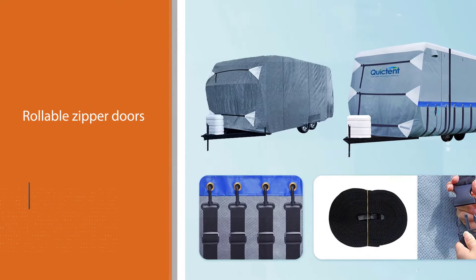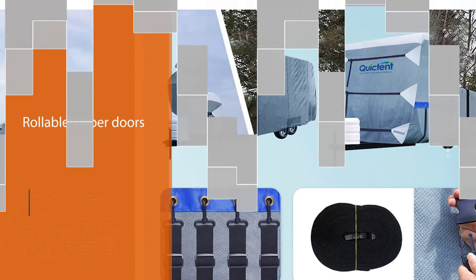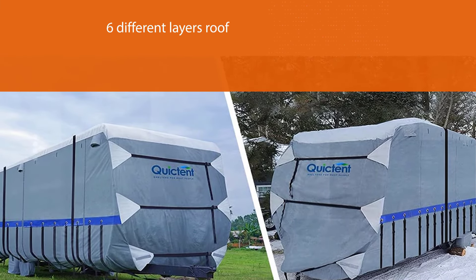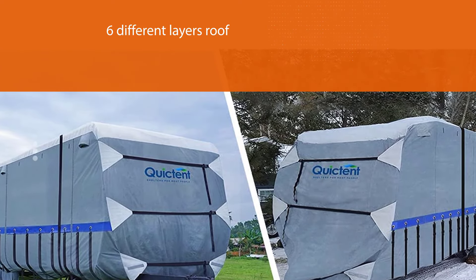The roof has six different layers for optimum UV and rain protection. Then the sides are four-ply for extra protection and durability. The six wind vents reduce stress on the cover and increase breathability.